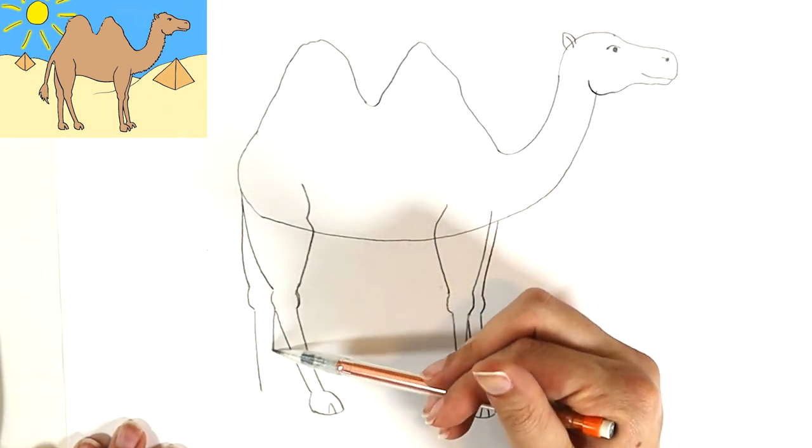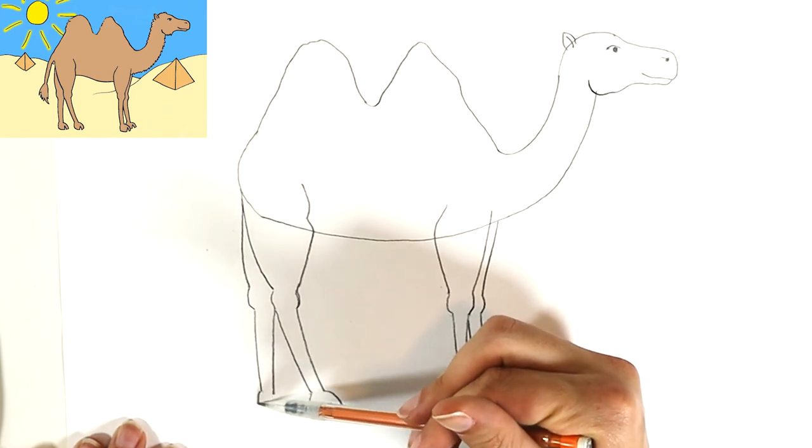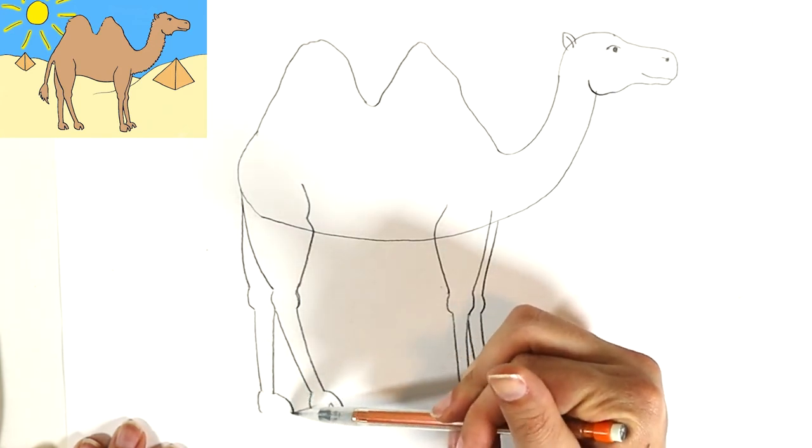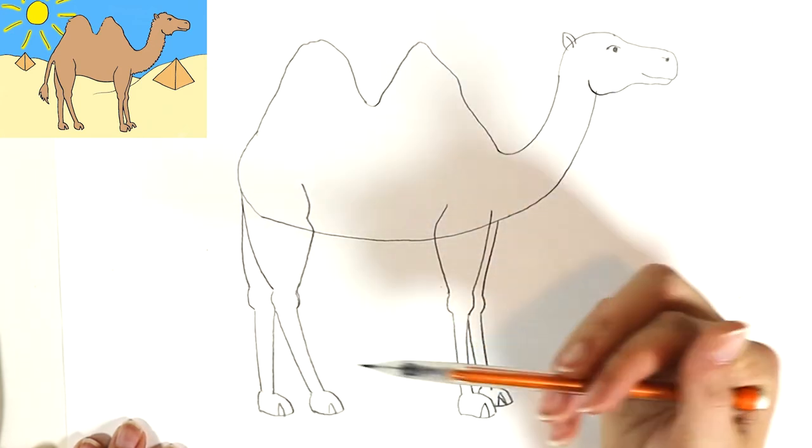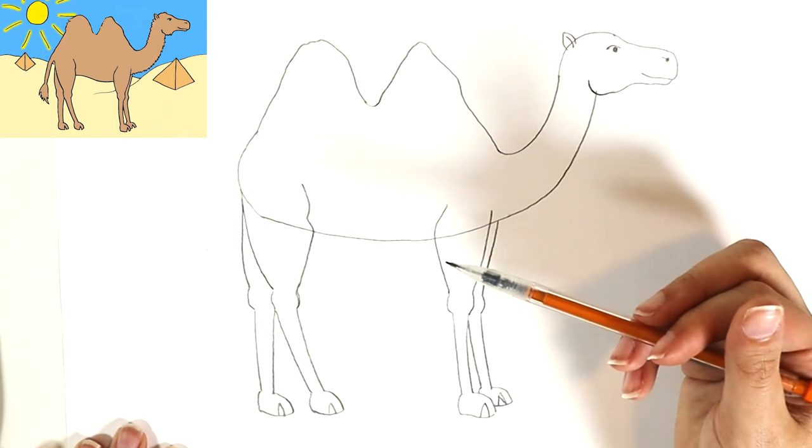But then this one straight up and down, and then on the other side straight up and down. There we go. And then we need our camel's tail. I was about to call him a giraffe.